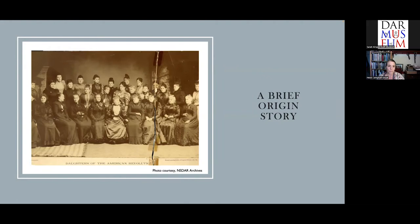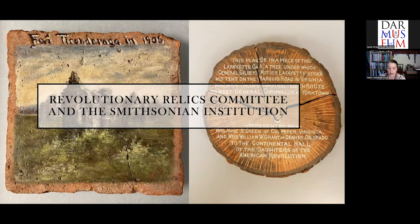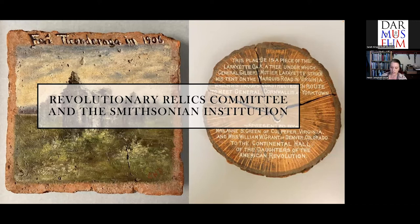To spearhead the accumulation of objects, the DAR created a Revolutionary Relics Committee, led by a chairman, vice chairman, and secretary, and included the state regents — the state-level executive officer of the DAR — of each state. In 1897, chairman Sue Virginia Field urged DAR members to — quote — search their homes for mementos of their honored ancestors and lend them to our national society to teach lessons of patriotism to the rising generation and knowledge of the deeds of valor of the brave men and women who made our government.